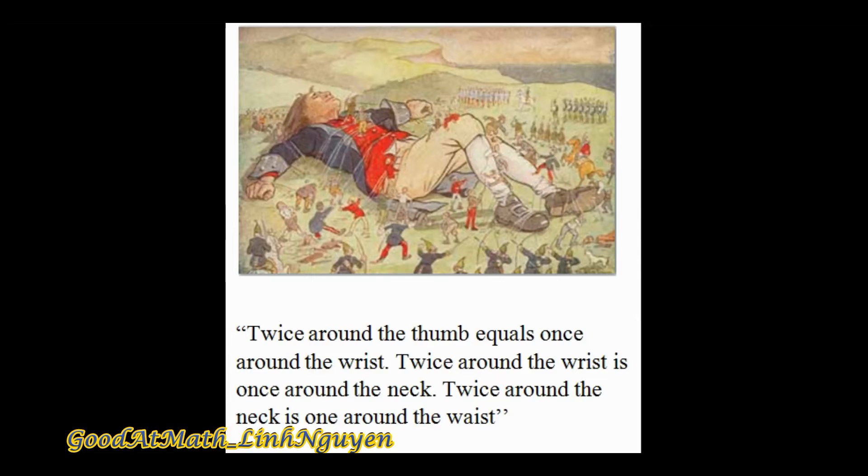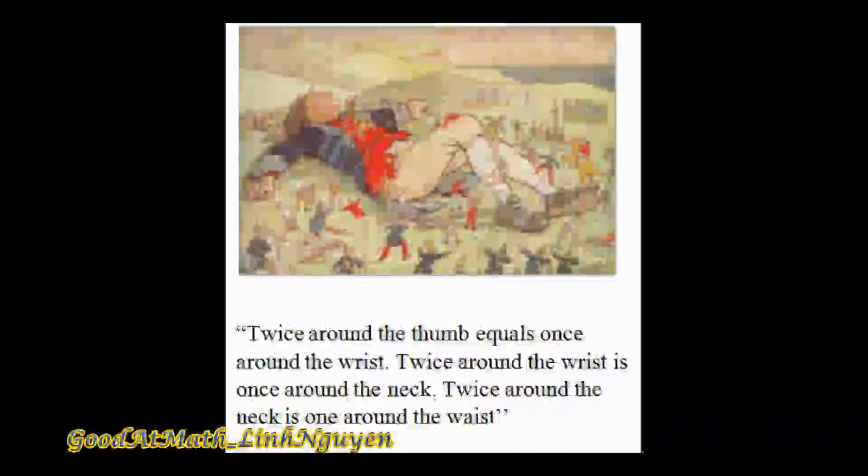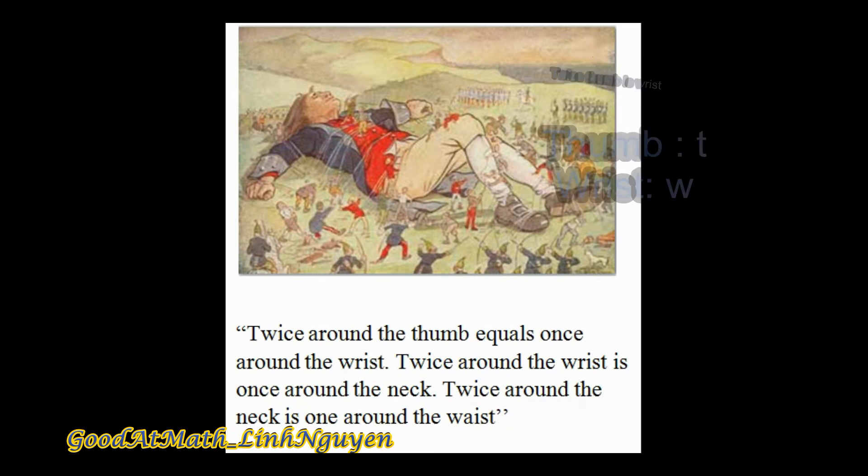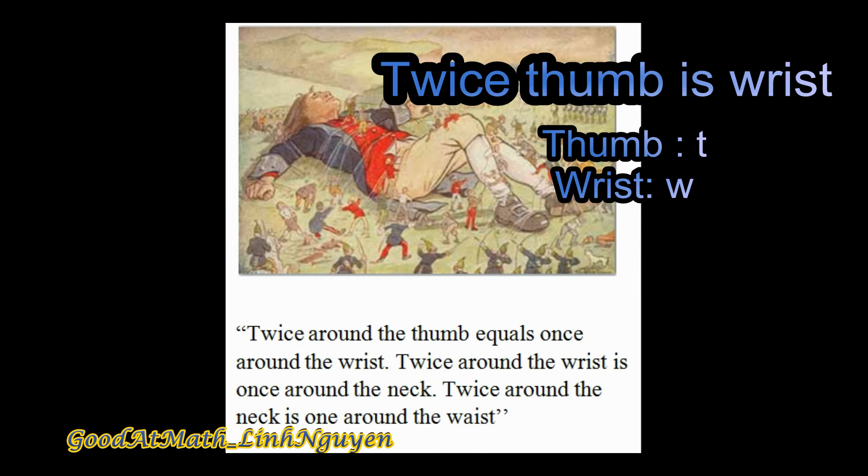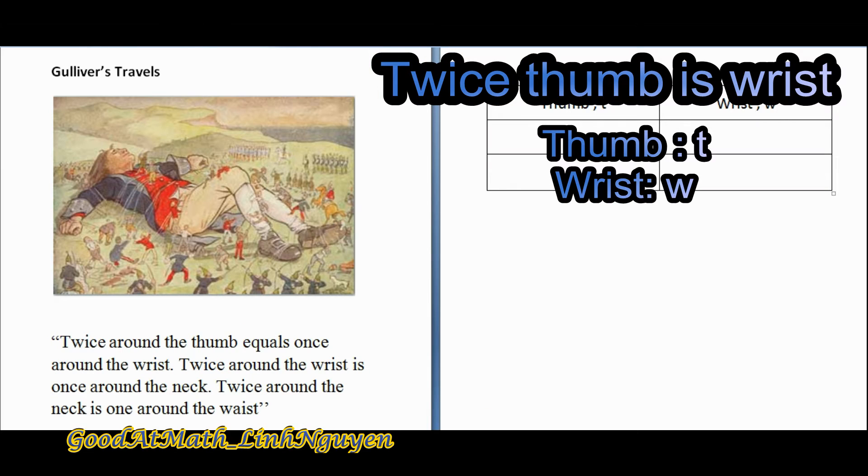Well, nowadays people are still using this rule when it comes to shopping. You can write an equation to describe the relationship between the distance around thumb and wrist. Twice thumb t is wrist w. So I have 2 times t equals w. This relationship is called direct variation.